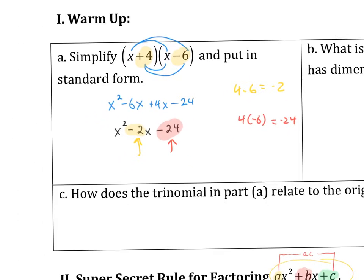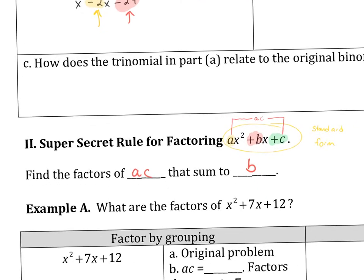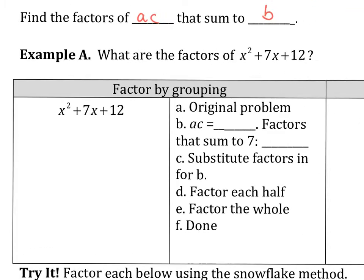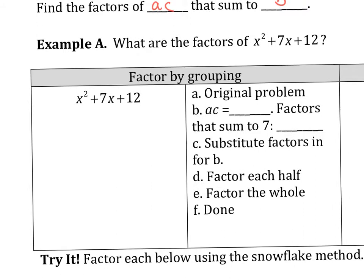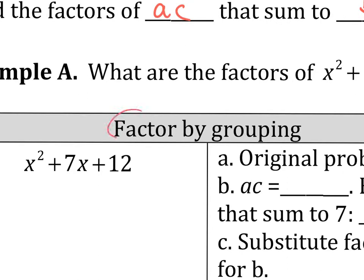So I'm going to show you the long way first. We're going to find the factors of ac that sum to b. I don't expect you to ever do this one again. I'm just showing you the formal method. After we do this once, I hope you panic a little bit and ask, can it be done faster?